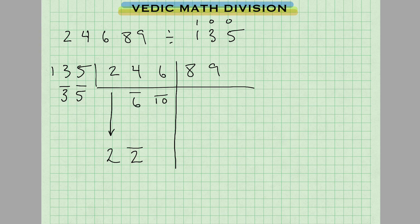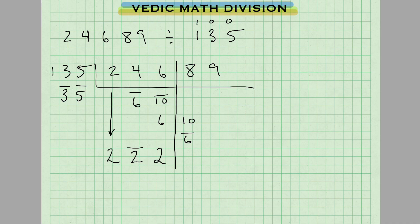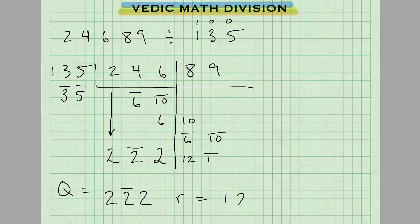We have 4 minus 6, which is negative 2 — written as 2-bar. Now 2-bar times 3-bar gives positive 6. And 2-bar times 5-bar gives positive 10. Adding: 6 and 6 is 12, minus 10 gives positive 2. Taking this 2: 2 times 3-bar is 6-bar, 2 times 5-bar is 10-bar. Adding vertically: 8 and 10 is 18, 18 minus 6 is 12. And 9 minus 10 is negative 1, written as 1-bar. So our quotient is 2, 2-bar, 2 and remainder is 12, 1-bar.